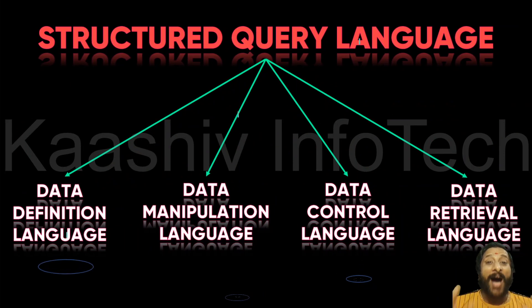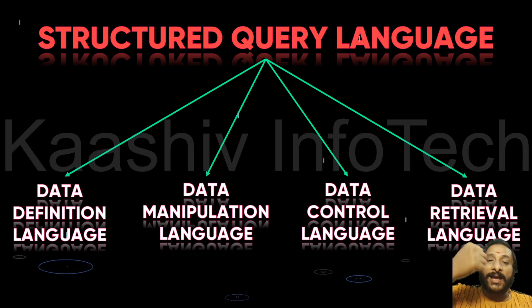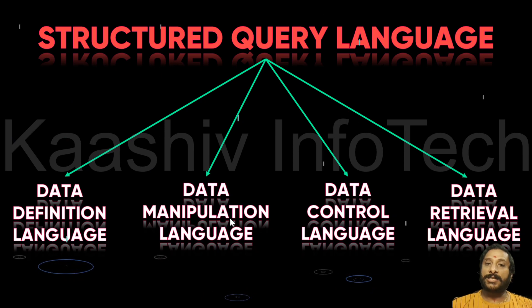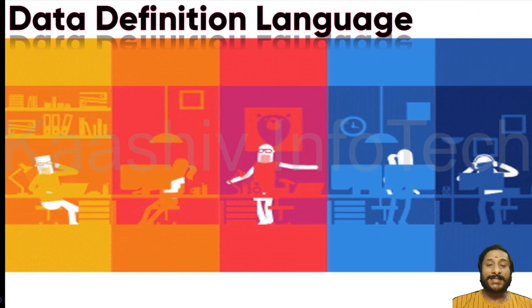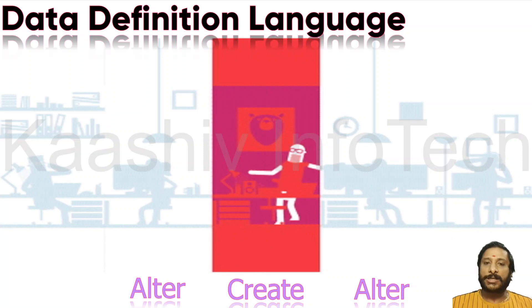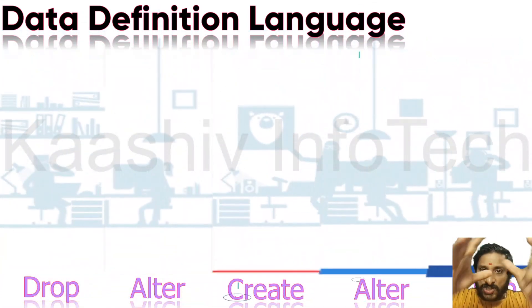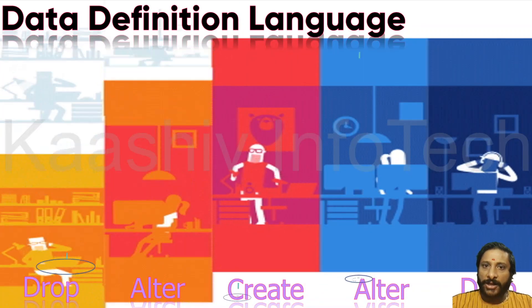If you talk about SQL — Structured Query Language — you have four major components: Data Definition, Data Manipulation, Data Control, and Data Retrieval. So we have Data Definition Language, Data Manipulation Language, Data Control Language, and Data Retrieval Language. Data Definition Language allows you to CREATE, ALTER, and DROP — you define the structure, modify it, or remove it.